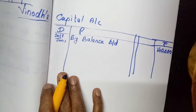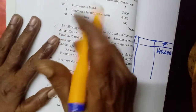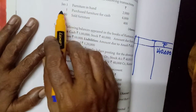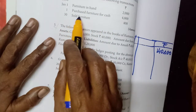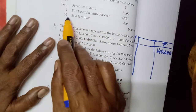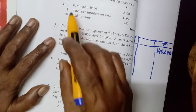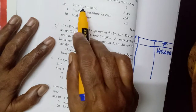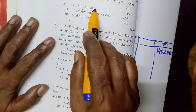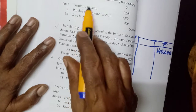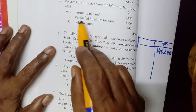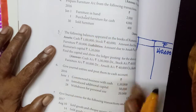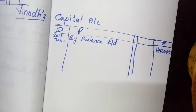Now the fourth exercise. Prepare furniture account from the following transactions. 2016 January 1: furniture in hand. Purchased furniture for cash. Sold furniture. So this first one is the opening balance — balance brought down we should write. Here they have not asked to prepare the journal entry; directly we have to post in the ledger account.